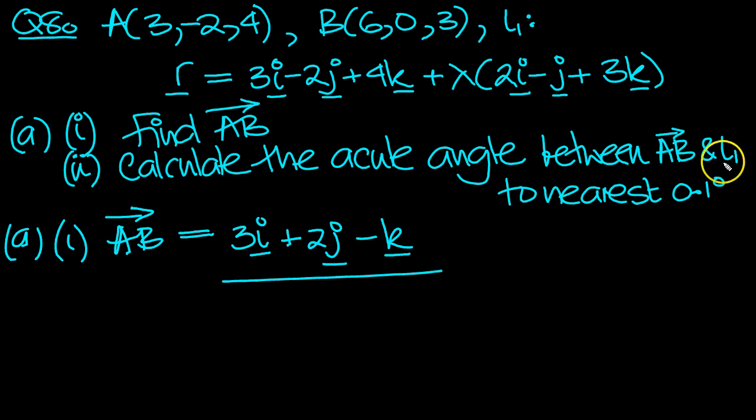Calculate the acute angle between AB and L1. Here's the directional part of the line L1. So the cosine of the angle: AB dot L1, the line L1, which we'll put as r, the vector r.